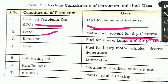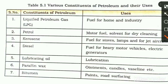The third product is kerosene, which is also familiar to you. We use kerosene as a fuel for stoves, lamps, and for jet aircrafts.